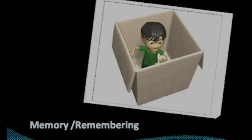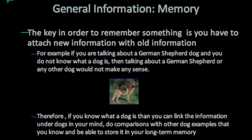Memory and Remembering. The key in order to remember something is you have to attach new information with old information. For example, if you are talking about a German Shepherd dog and you do not know what a dog is, then talking about a German Shepherd or any other dog would not make any sense. Therefore, if you know what a dog is, you can link the information under dogs in your mind, do comparisons with other dog examples that you know, and be able to store it in your long-term memory.